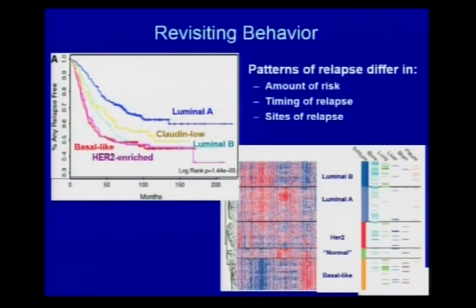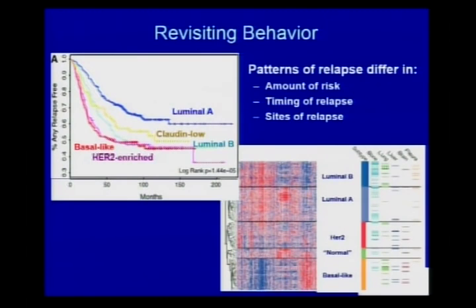We also have to revisit behavior — what does it mean to have one of these different kinds of breast cancer? These are Kaplan-Meier curves showing proportion of people free from relapse. HER2-positive and basal-like triple negative cancers relapse more and relapse earlier, then level off. Luminal B starts to catch up once you get further out. Amount of risk, timing of relapse, and sites of relapse are all different.